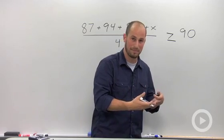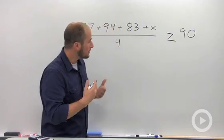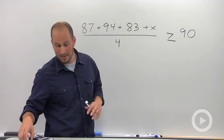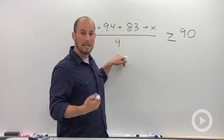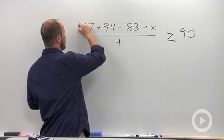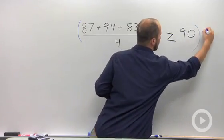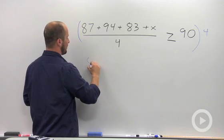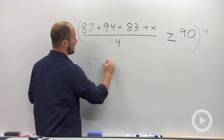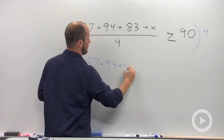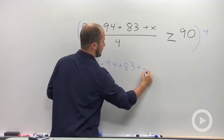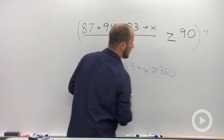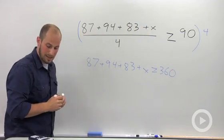is pretty much exactly the same as equalities. For this one, get rid of our denominator. Multiply both sides by 4. This side's 4 cancels, leaving us with just our numerator, and then 90 times 4 is 360. Combining like